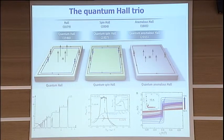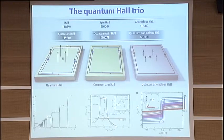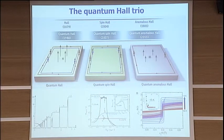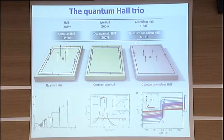Bismuth telluride by itself is a strong spin-orbit coupled system realizing a three-dimensional topological insulator, but it is not magnetic. If you introduce magnetic dopants from the 3d elements such as chromium or iron — in this particular case it was chromium — you realize the basic requirements of the Anomalous Hall Effect: strong spin-orbit coupling and possible ferromagnetic moments.